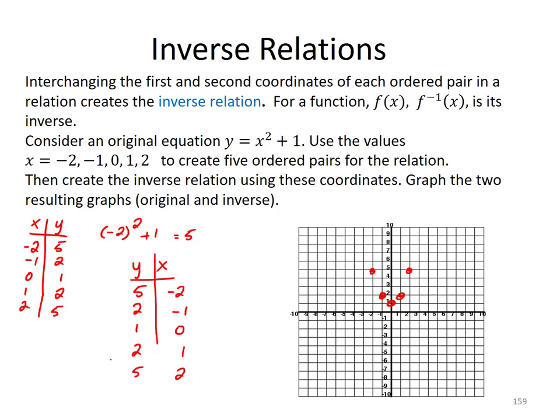So if I plot those points, 5, negative 2, 2, negative 1, 1, 0, 2, 1, and 5, 2. And I'm going to connect these points in a smooth curve if I can. Same with the original points, the original relation. And there we have graphed the two resulting graphs, the original and the inverse.